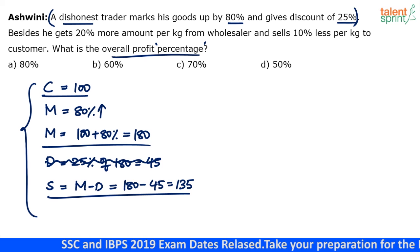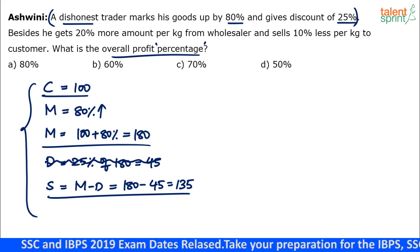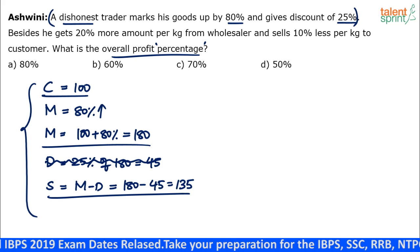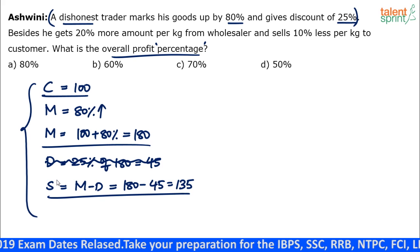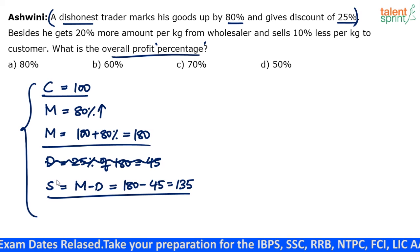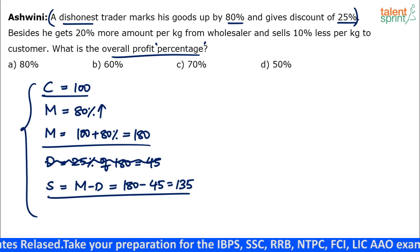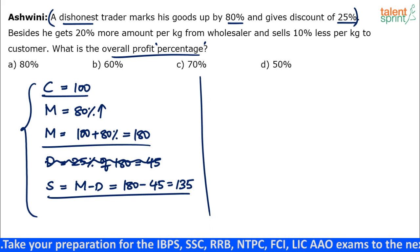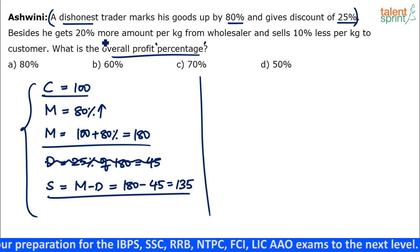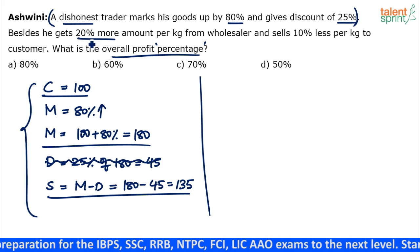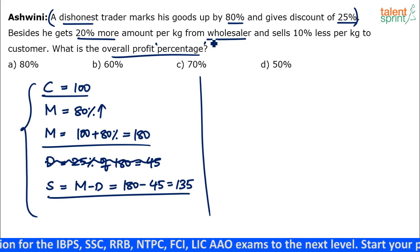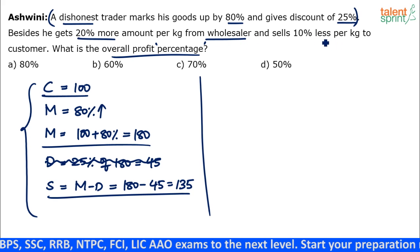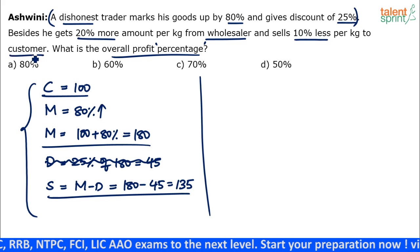The first part of the question can be solved mentally, arriving at a profit of 35 percent, or selling price of 135 for a spend of 100 rupees. Now for the second part: besides the markup and discount, he gets 20 percent more per kg from the wholesaler and sells 10 percent less per kg to the customer.